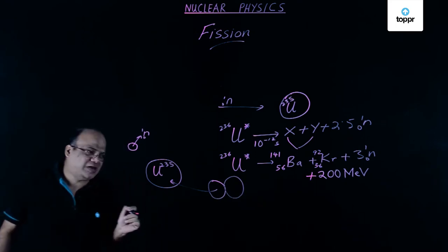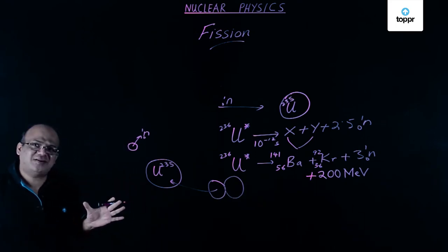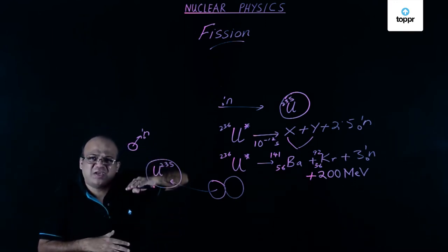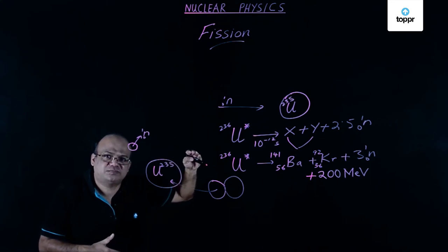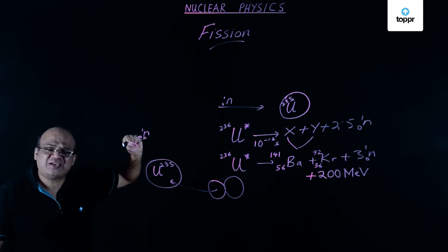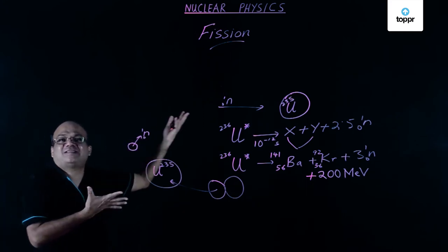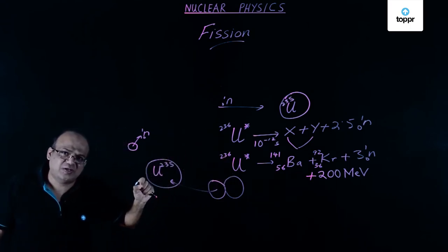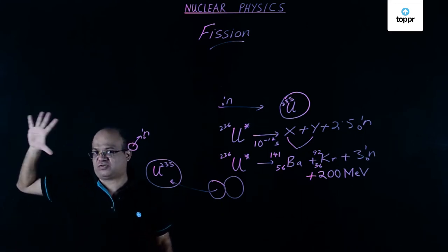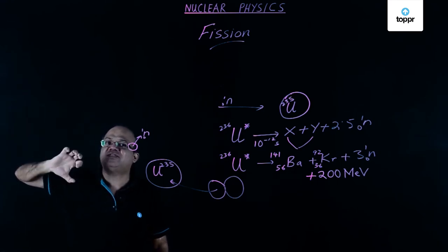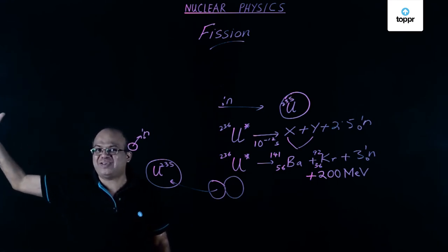In a nuclear reactor we do not want such a situation to arise. We want the reaction to be steady and controlled — one neutron per fission should produce the next fission; the remaining neutrons should either escape or be absorbed. For this we have neutron-absorbing rods of boron steel to absorb some of the neutrons.